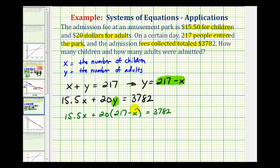So now we'll clear the parentheses and solve for x. So we'll have 20 times 217, that's going to be 4,340 minus 20x must equal 3,782.